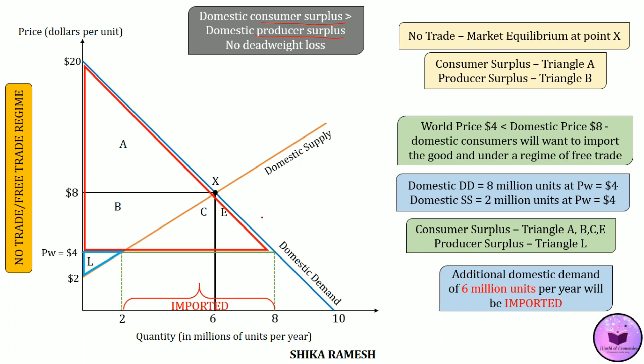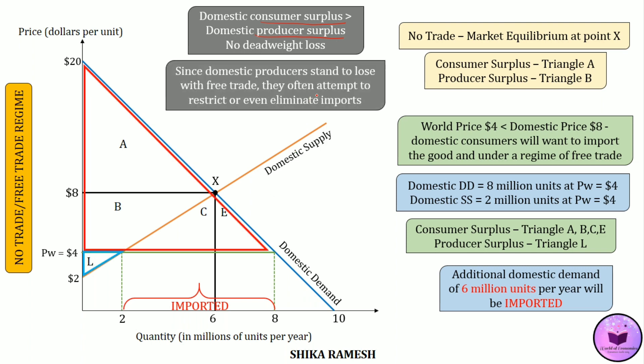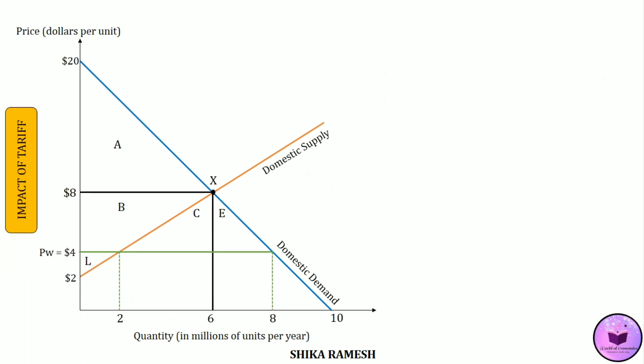Since it is clearly visible that domestic producers stand to lose with free trade, they will often attempt to restrict or even eliminate imports. Since domestic producers are suffering under a free trade regime, the government will try to protect them by imposing import quotas and tariffs. Now let's see what happens to domestic consumer surplus and producer surplus when the government imposes a tariff.